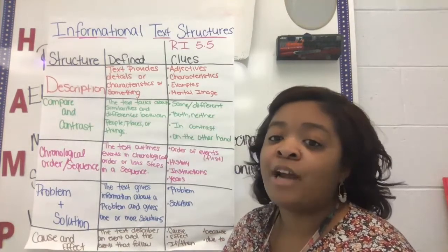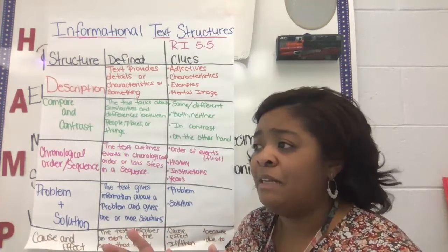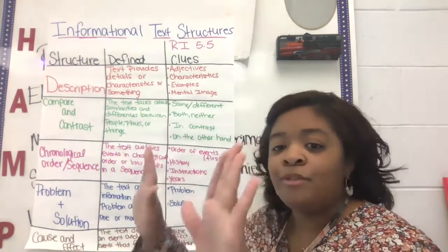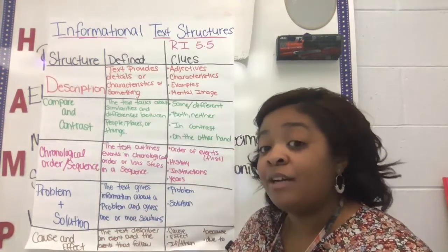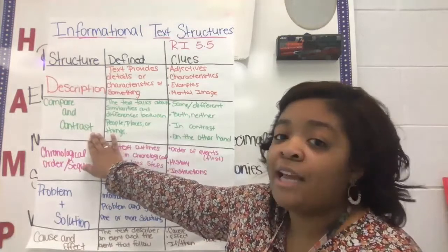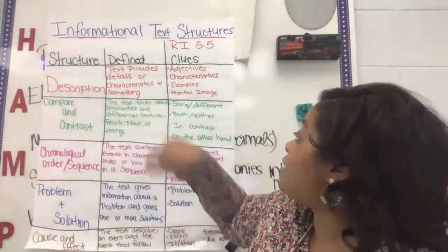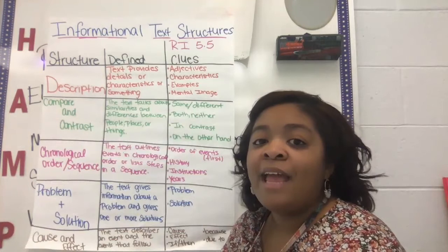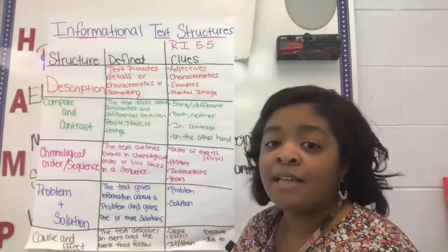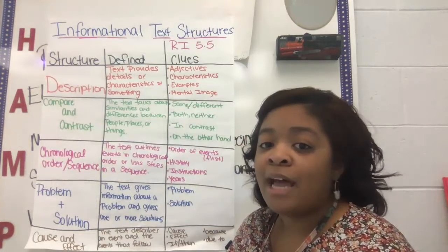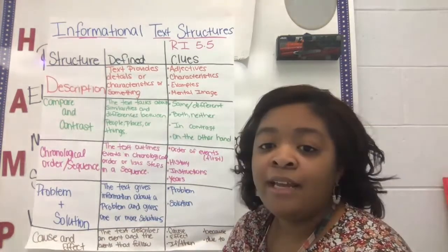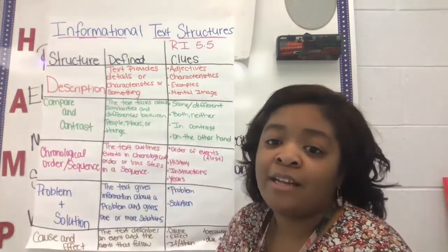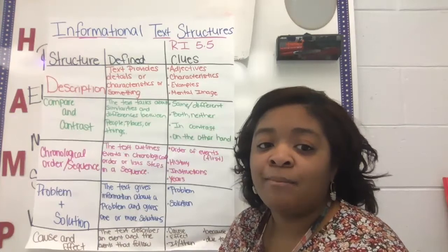Our second text structure is compare and contrast. You guys have been doing compare and contrast probably since kindergarten — you've made Venn diagrams, telling how two things are alike and how they're different. In the compare and contrast text structure, the text talks about similarities and differences between people, places, or things. Some clue words you may find include: same, different, both, neither, in contrast, on the other hand. When we see these clue words, we know right away that something is being compared and contrasted.